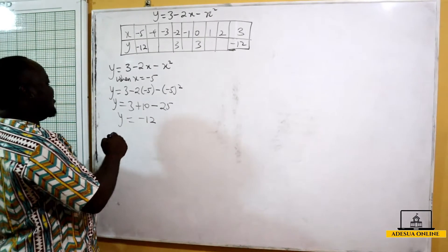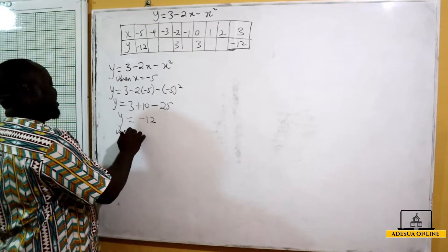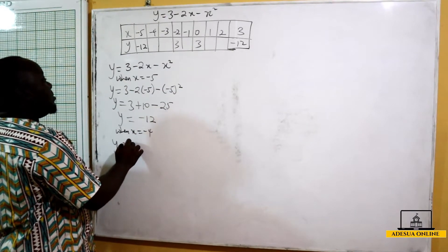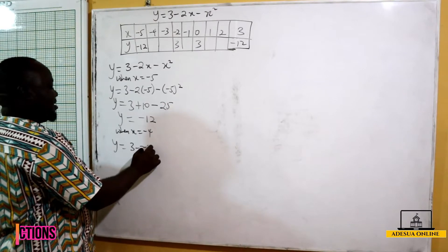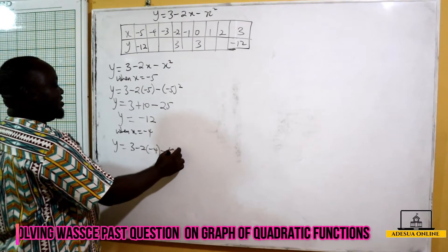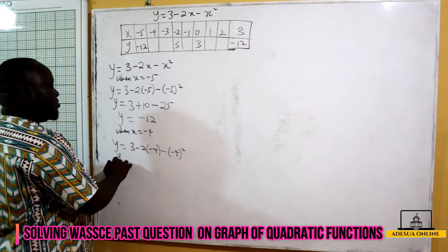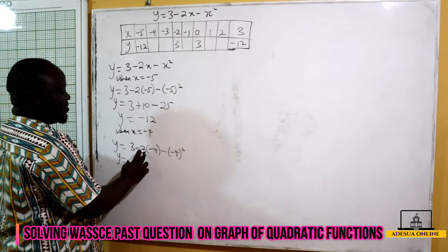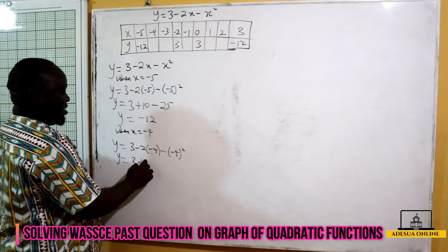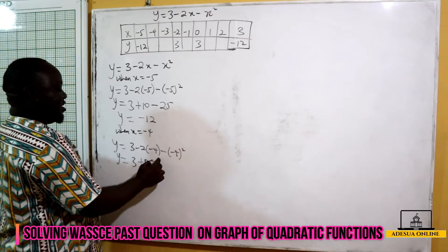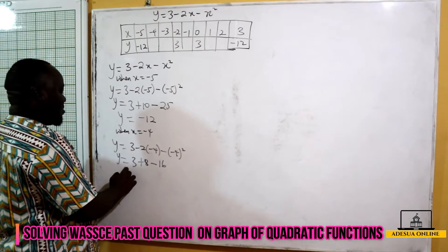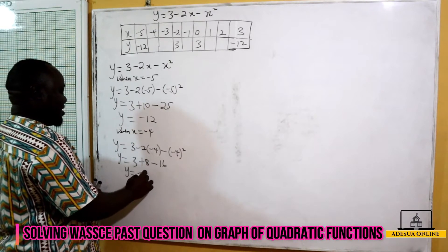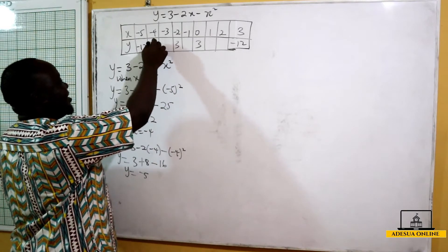When x is negative 4, y equals 3 minus 2 times negative 4 minus negative 4 squared. That gives us 3 plus 8 minus 16, which is 11 minus 16, equals negative 5. So when x is negative 4, y is negative 5.